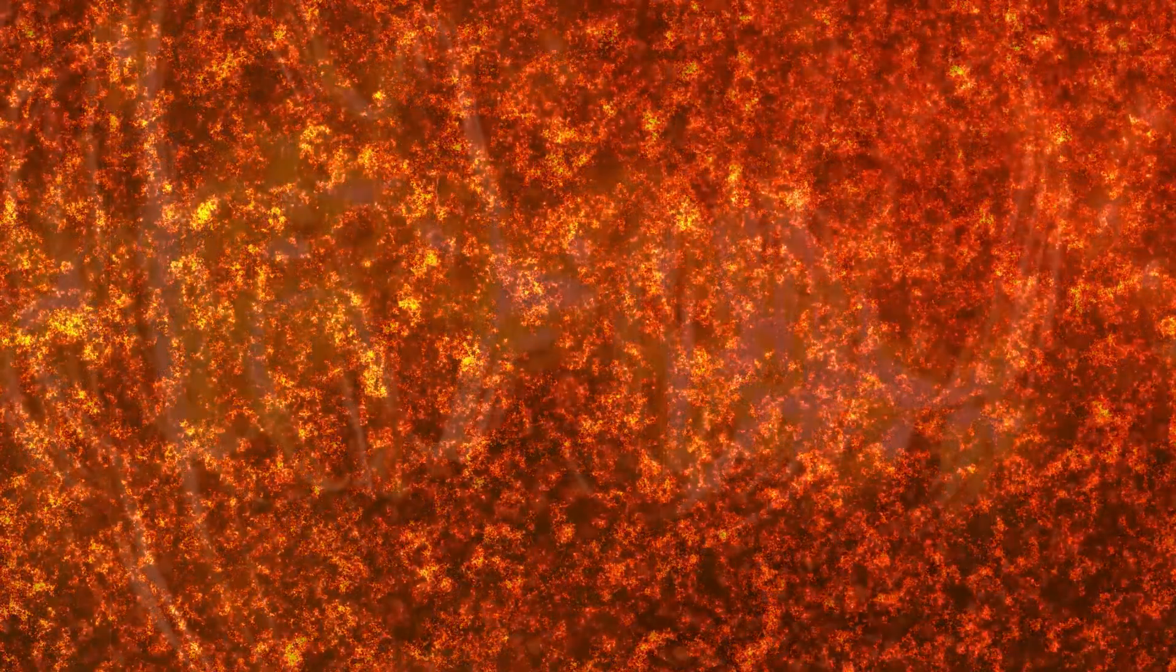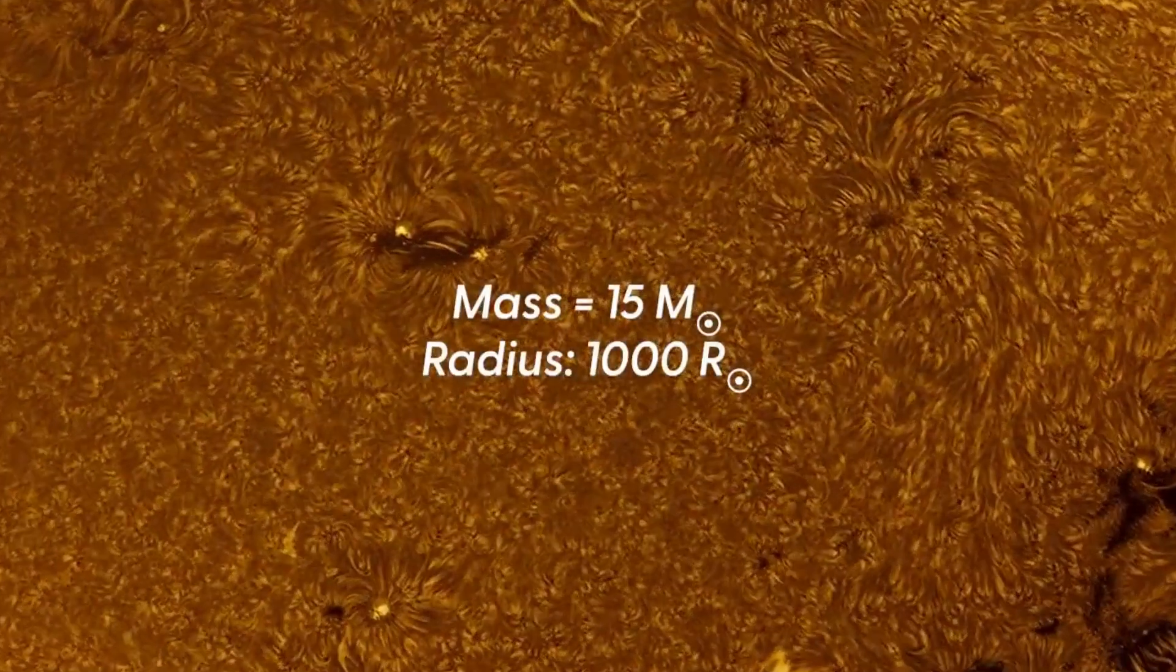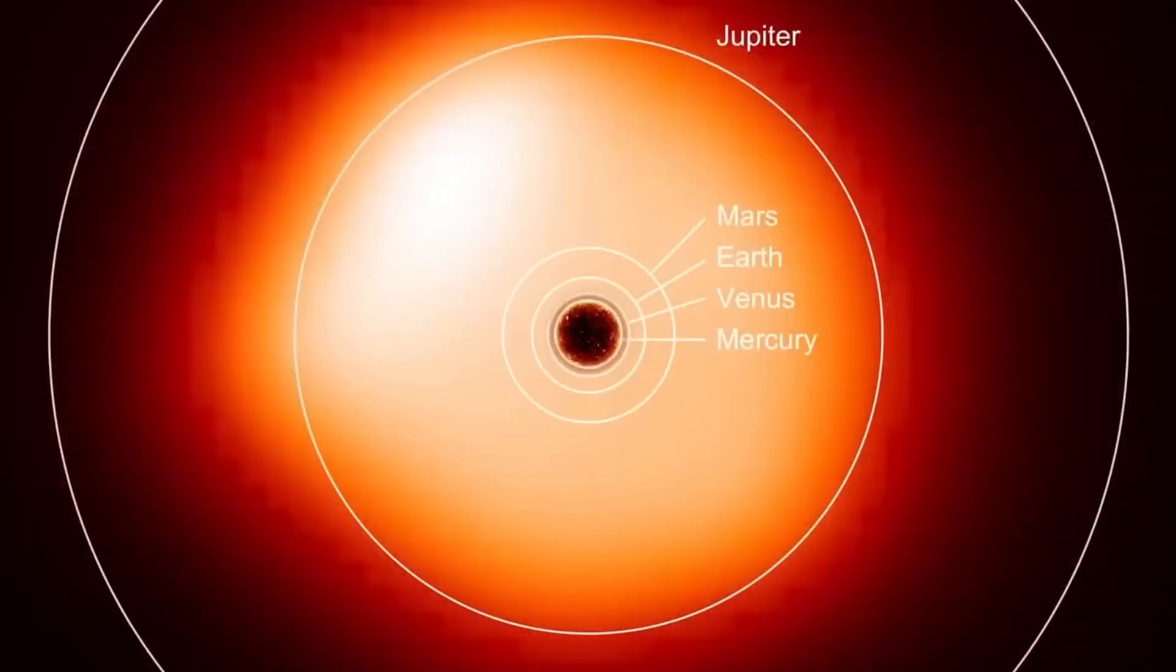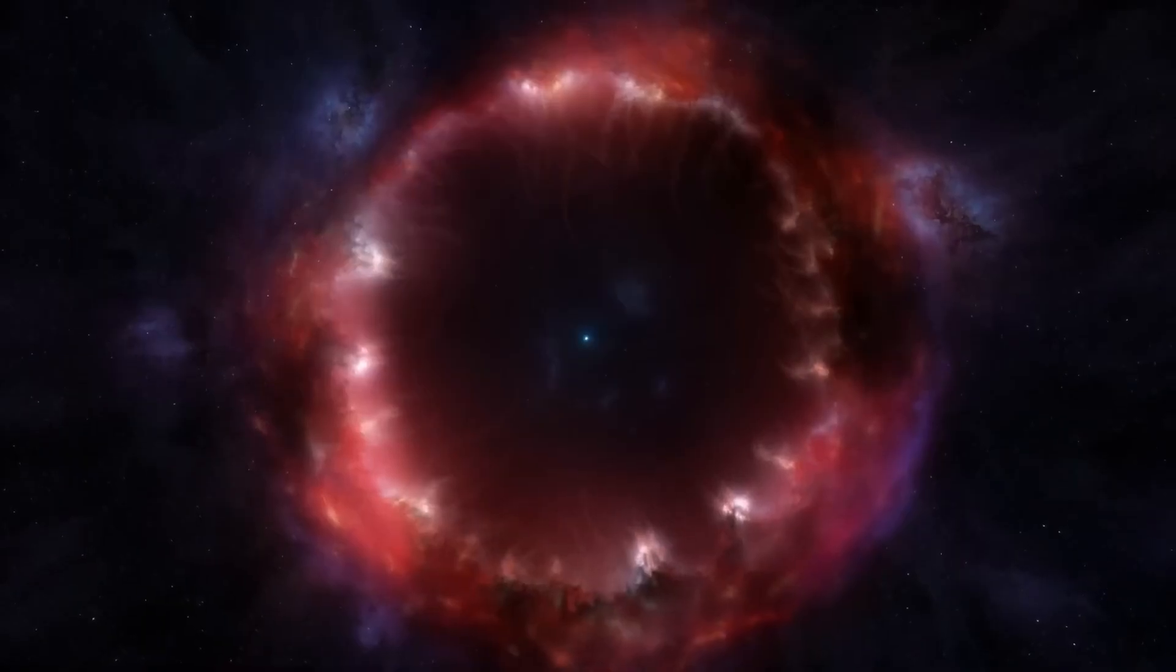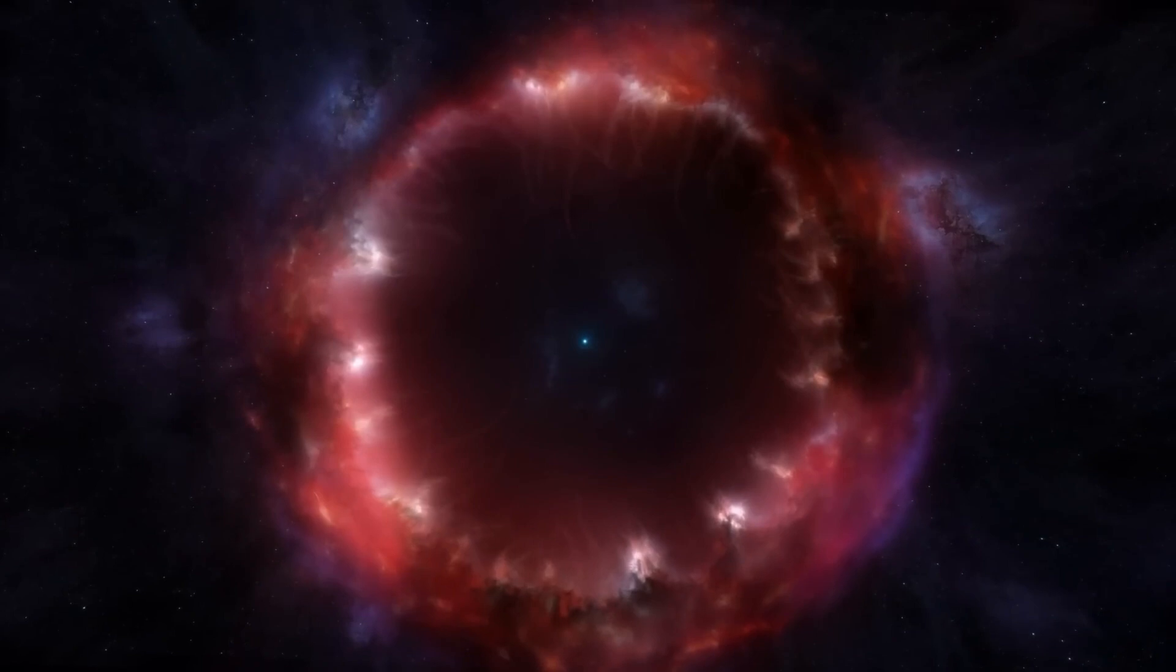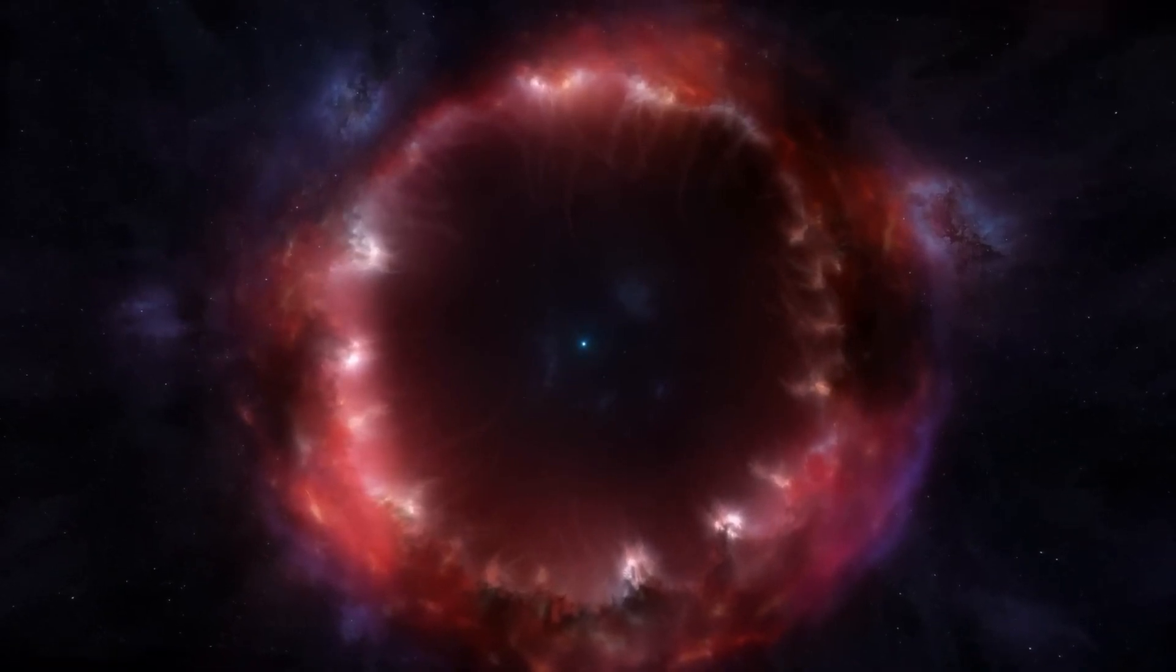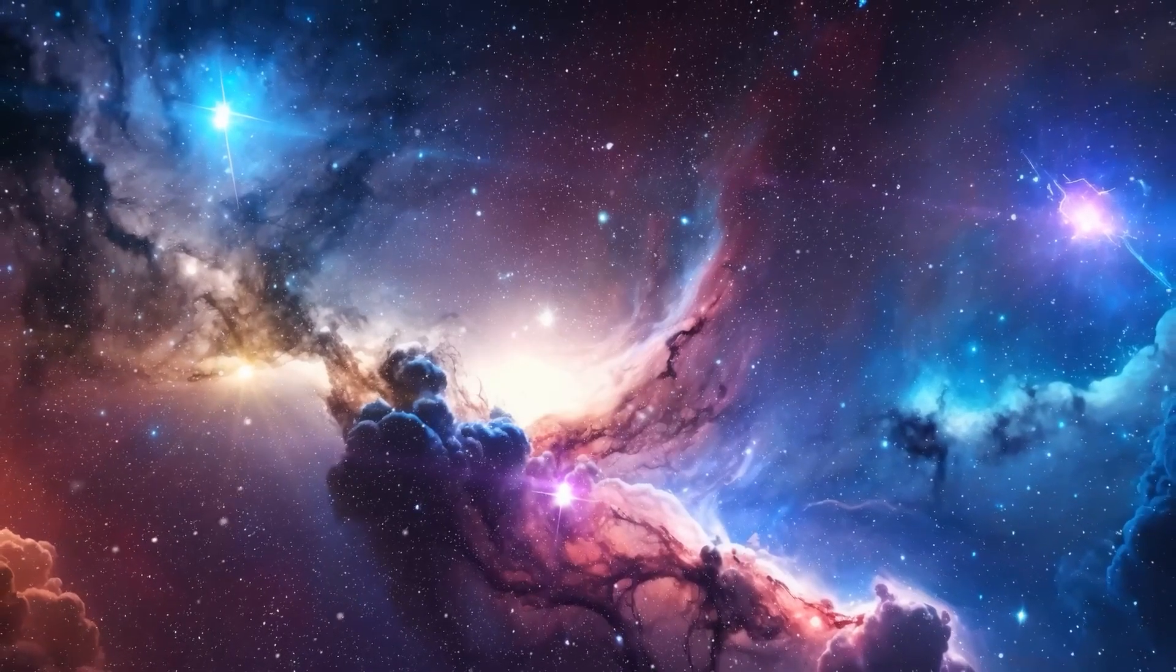Eventually, when the supply of hydrogen ran out, they fused helium into heavier elements such as carbon and oxygen. These processes eventually led to massive supernova explosions that scattered the heavy elements into space, contributing to the formation of new generations of stars.